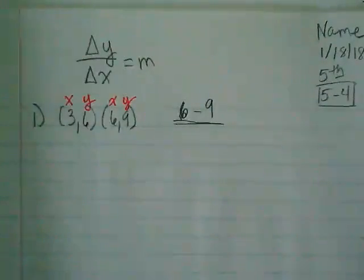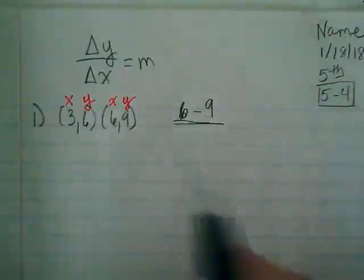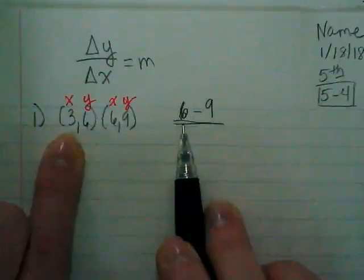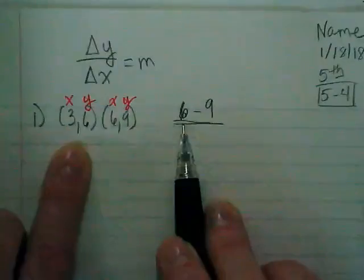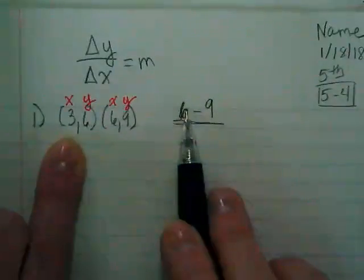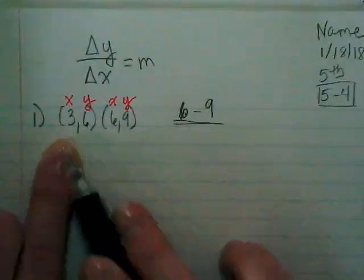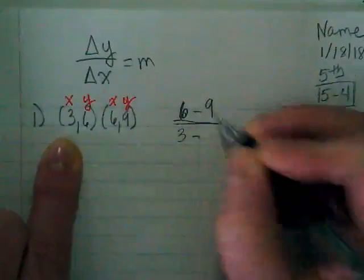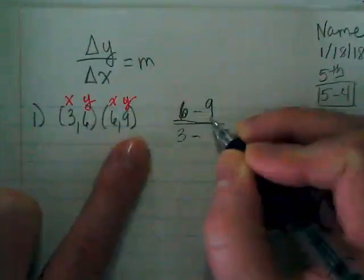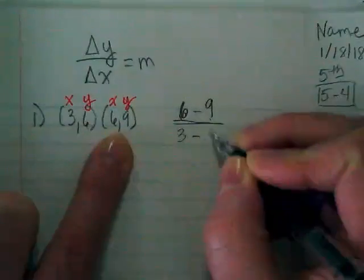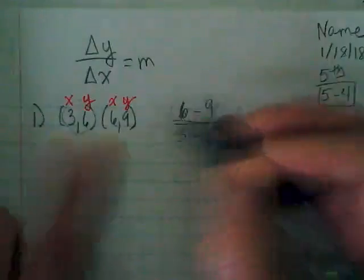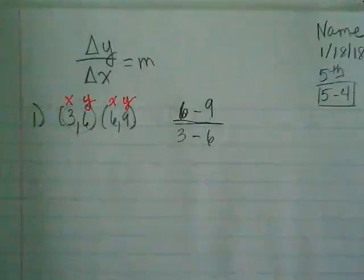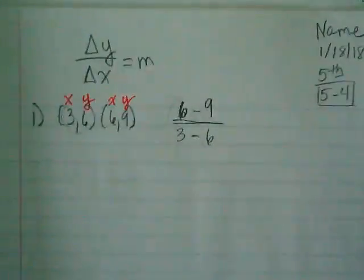What comes after? Nine. Here's where the only important order thing happens. This 6 came from this ordered pair, so this 3 has to be underneath it. I'm rewriting this ordered pair as 6 over 3 because they're an ordered pair together. I'm going to put my subtraction sign in. And then what's the X that goes with this 9? 6.